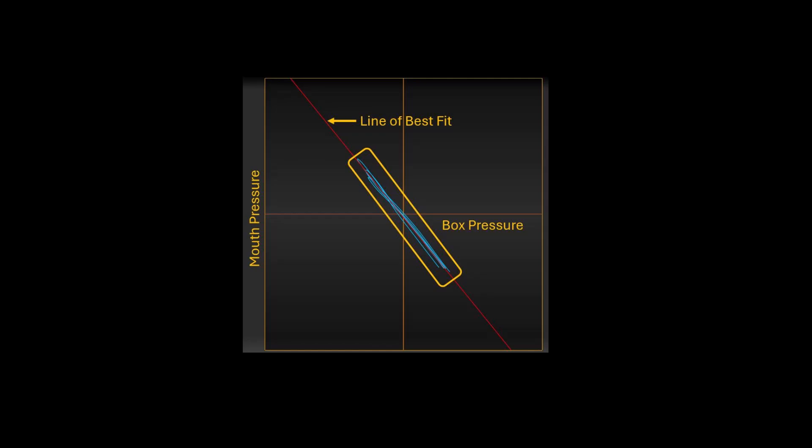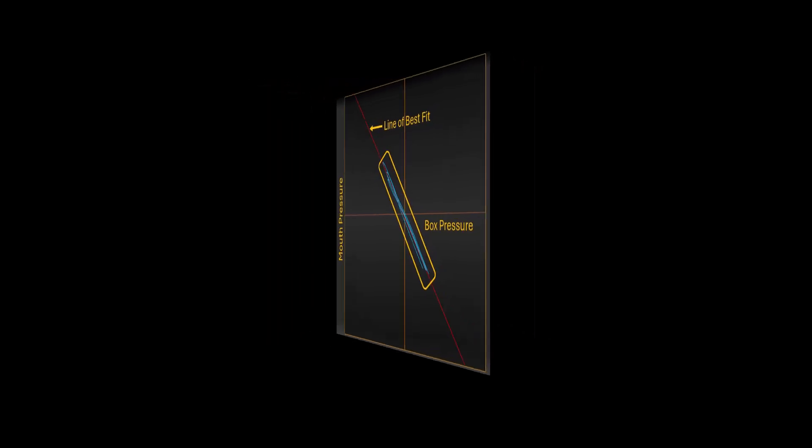In general, the line of best fit should be at the same angle or tangent that the blue tracing is at. If the line of best fit is not at the correct angle, then an adjustment is needed.